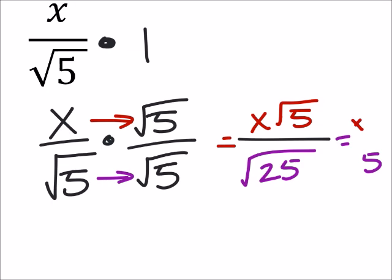So, now I've got x times the square root of 5, all over 5. See how there's no radical in the denominator anymore? And this right here is my final answer.